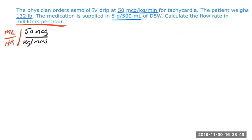We know we're going to need to get rid of these minutes, so we might as well do that now. We have 60 minutes in one hour. We'll go ahead and circle 'hour' here because this is one of the final measurements that we need, so we don't want to cancel that one out. We can cancel out minutes and minutes.